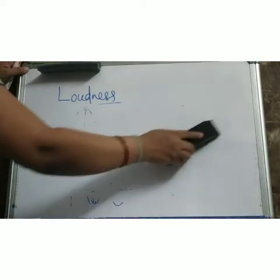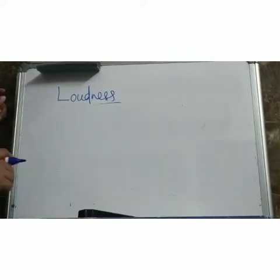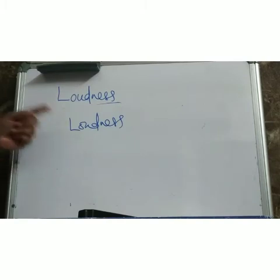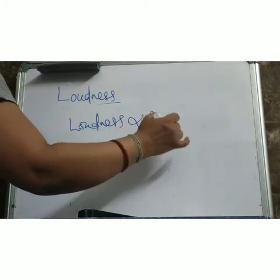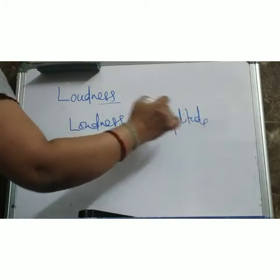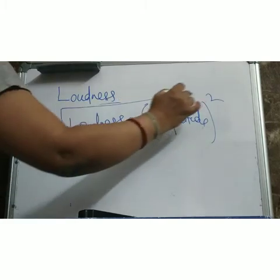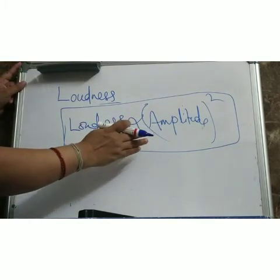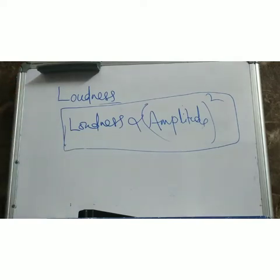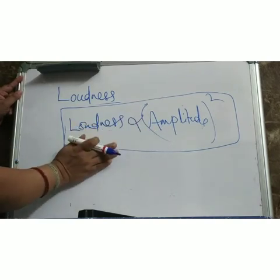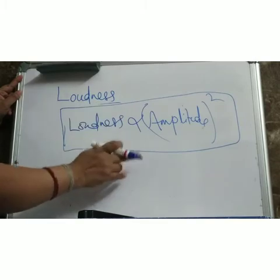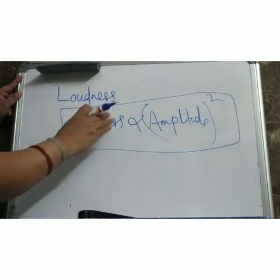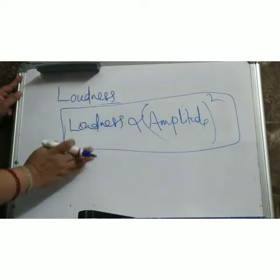This is a very important point for your exam. Loudness is directly proportional to amplitude squared. That means if you double the amplitude, loudness increases four times. So loudness depends on the amplitude of the vibrating body, and it is directly proportional — amplitude increases means loudness increases.